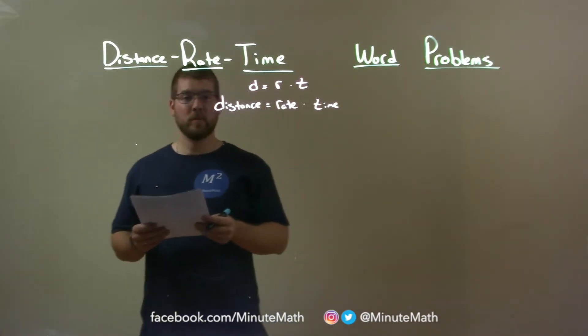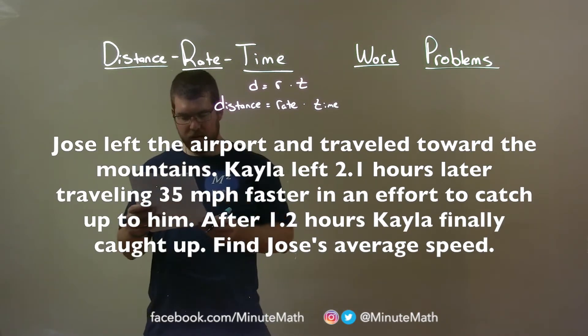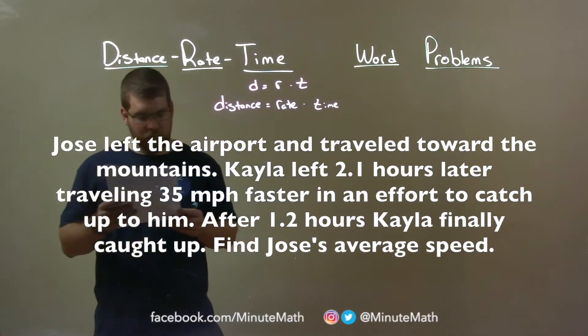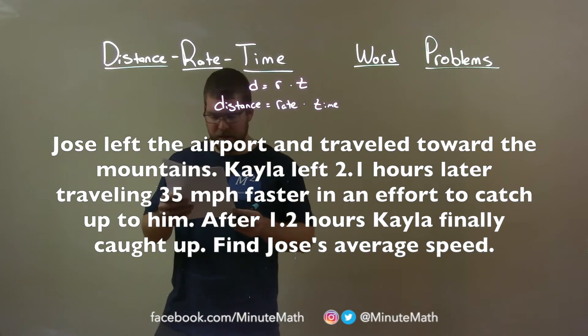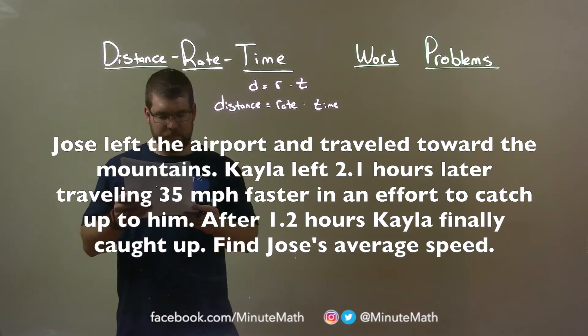If I was given this word problem: Josie left the airport and traveled toward the mountains. Kayla left 2.1 hours later, traveling 35 miles per hour faster in an effort to catch up to him. After 1.2 hours, Kayla finally caught up. Find Josie's average speed.